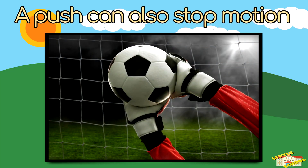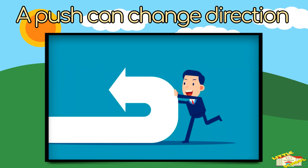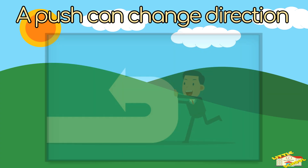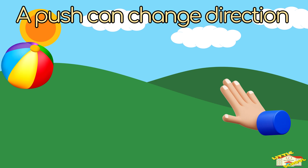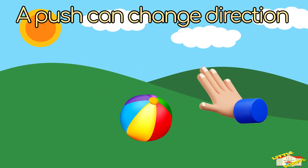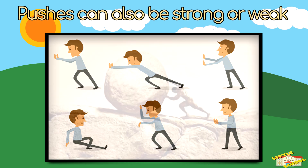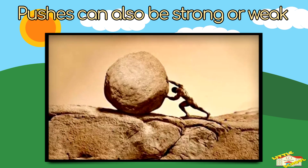A push can change direction. If a ball is rolling toward you and you tap it from the side, your push makes it roll in a different direction. Pushes can also be strong or weak. A strong push makes objects move faster or farther.